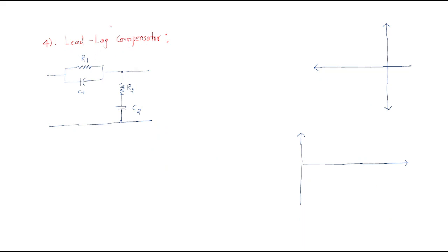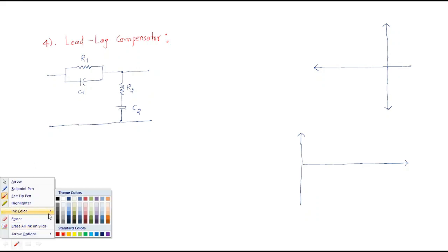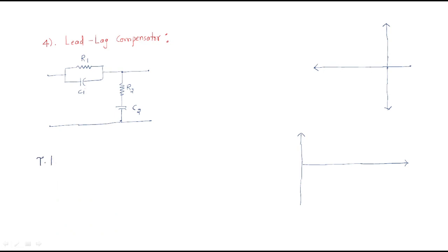In the lead-lag compensator, the name itself tells us: lead comes first, then lag. Lead means the resistor and capacitor are in parallel combination — so R₁ and C₁ are connected in parallel. Lag means the resistor and capacitor are in series combination — so R₂ and C₂ are connected in series. The first network is the lead network and the second network is the lag network. The transfer function of the lead-lag compensator is: (1 + τ₁s) / (1 + α·τ₁s) ...